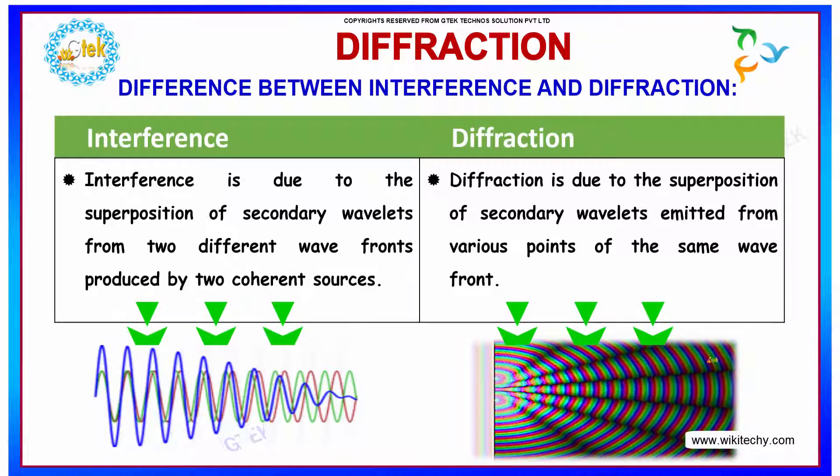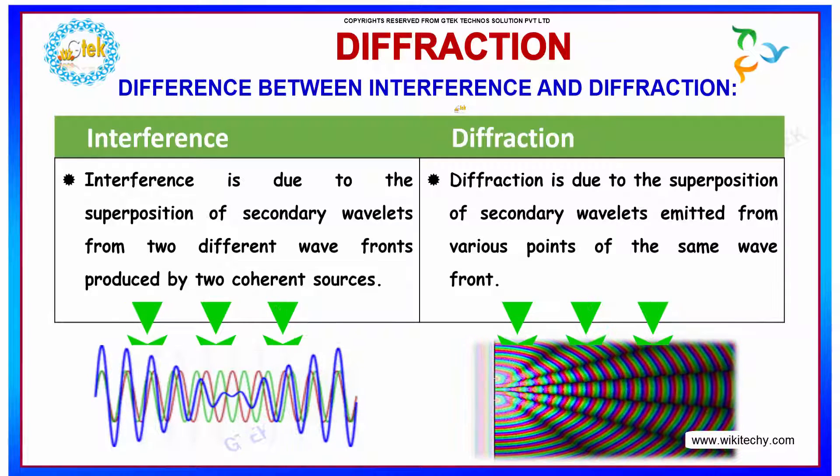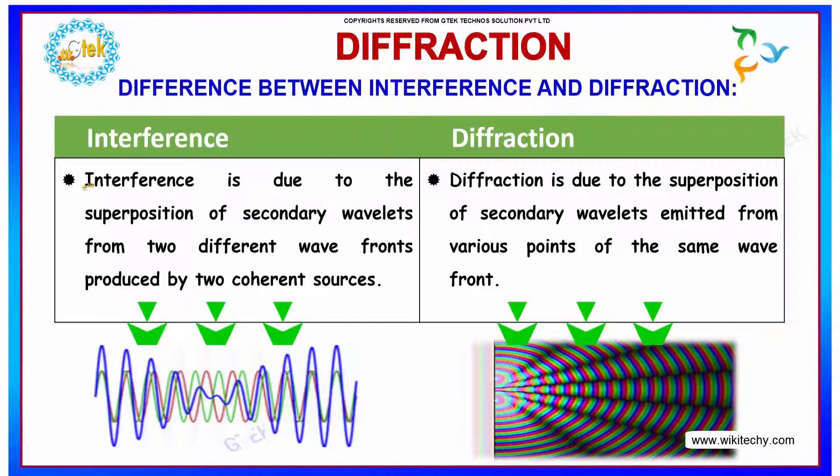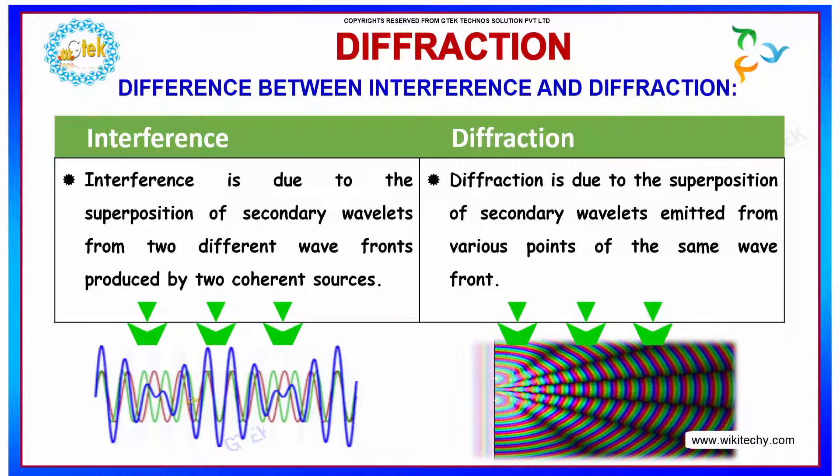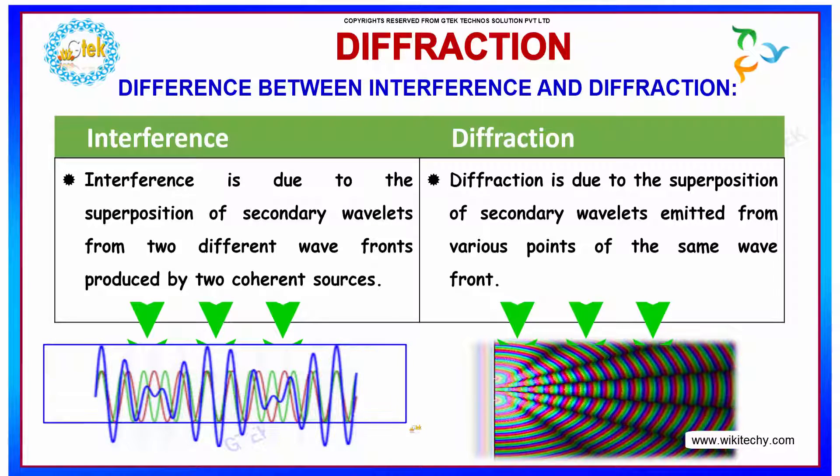We will talk about the difference between interference and diffraction. Interference is due to the superposition of secondary wavelets from two different wave fronts produced by two coherent sources.